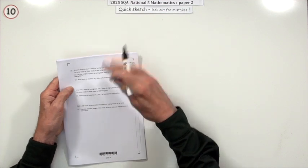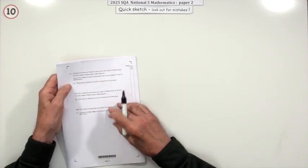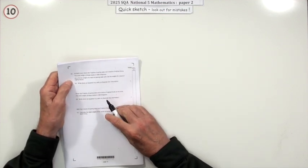Problem ten. Six marks. Simultaneous equations question. Bob's lorry has seven stacks of paving slabs and three stacks of edging blocks.